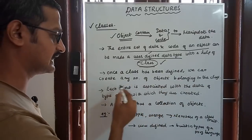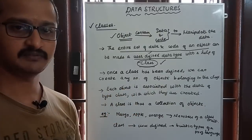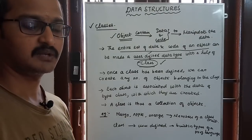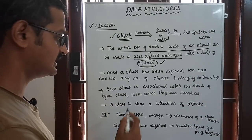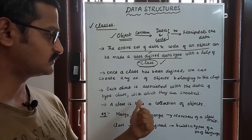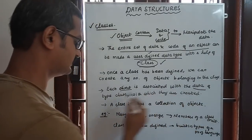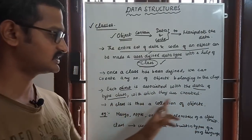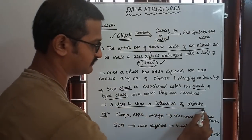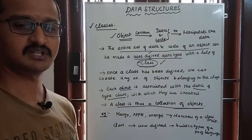Once a class has been defined, we can create any number of objects belonging to the class. Each object is associated with the data of type class with which they are created. A class is thus a collection of objects.